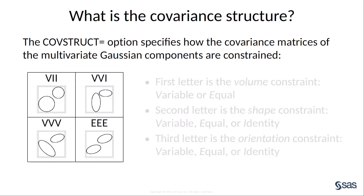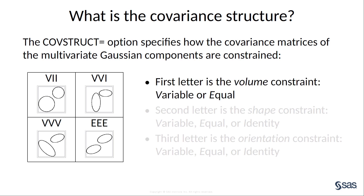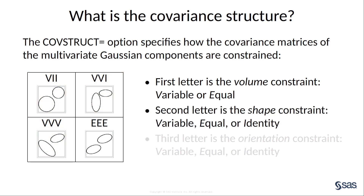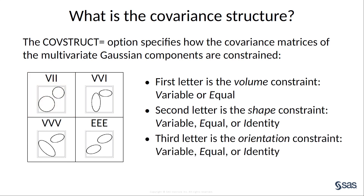Before reviewing the results, here's some information about the covariance structures. The figures provide simple examples to illustrate some different types. Those three-letter shorthand names indicate how the covariance matrices in the multivariate Gaussian components share elements of their structure. The first letter is the volume constraint, indicating whether the different covariance matrices have E for equal volumes or V for variable volumes in each cluster. The second letter is the shape constraint, which can also take the I value, meaning the shape is isotropic or spherical, like the identity matrix. Finally, the third letter indicates the orientation constraint — if the orientation constraint is I, the covariance matrices are not rotated with respect to the coordinate axes.